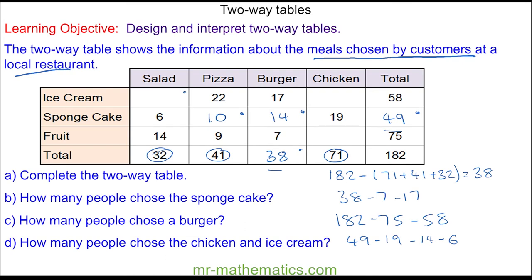I can work out the people who had a salad and an ice cream, which is 12. Now I can work out how many people had the chicken and the ice cream, which is seven. And finally, the chicken and the fruit, which is 45.